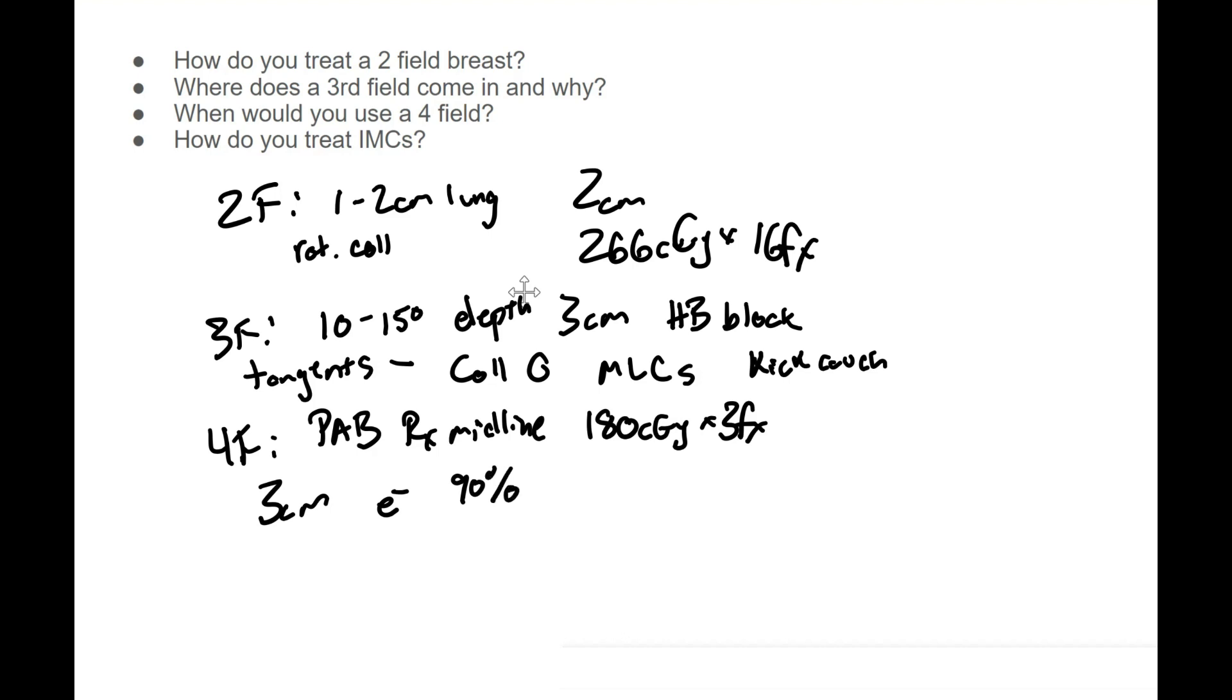And our goal with our electron is that we're going to get our ninety percent of our isodose line at four cm. So that ninety percent will go past - the electrons aren't going to stop immediately - but that ninety percent will go to the four cm. That means at three cm that depth is going to get enough dose that's going to be what we're focusing on. And the field size is five cm from the midline.